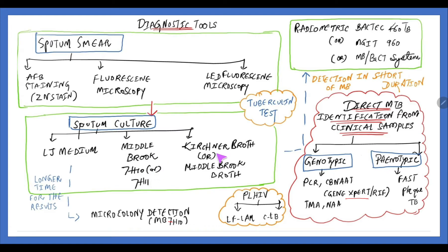Middlebrook agar, Kirchner broth, or Middlebrook liquid medium can be used. To directly detect bacteria from clinical samples, there are genotypic and phenotypic options. In genotypic methods, PCR-CBNAAT, GeneXpert, and TMA and NAA are being used. Phenotypic methods include FASD and PLoG-TB, which is a fast technique using mycobacterial growth. For people living with HIV, a serological test — lateral flow urine LAM assay — can be done.